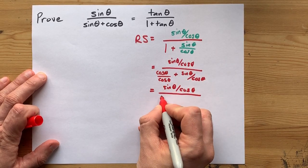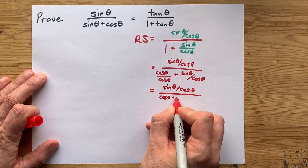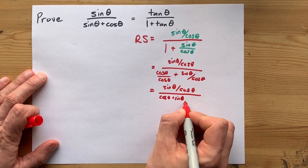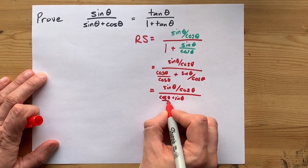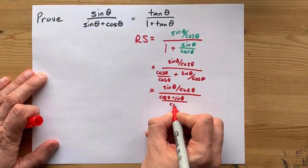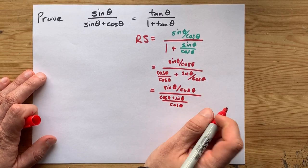Top plus top gives me cos theta plus sine theta. Those are together all over the common denominator of cos theta.